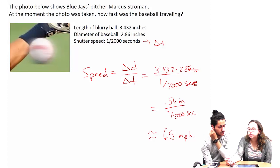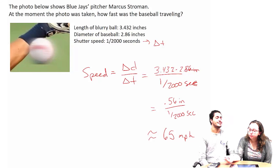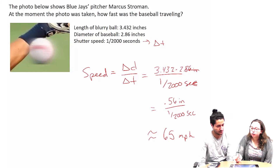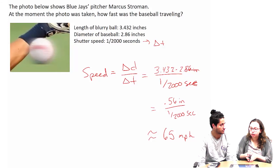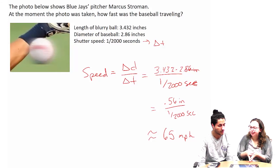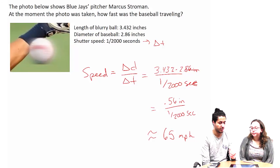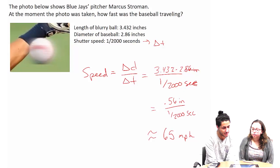So it's the velocity over the interval — our best approximation for the moment the photo was taken, because we have such a small interval. We can't really have a change in time over an instantaneous moment, so we need that interval. It's approximately 65 miles per hour because of that interval. That makes sense.